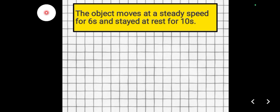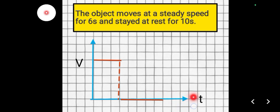Let's have this example. An object moves at a steady speed for 6 seconds and stays at rest for 10 seconds. Construct a velocity versus time graph from this description. We have the vertical axis for velocity (V) and the horizontal axis for time. Assuming each interval represents 2 seconds, we have 0, 2, 4, 6 seconds. The object moves at a steady speed for 6 seconds, shown as a horizontal line at a constant level.